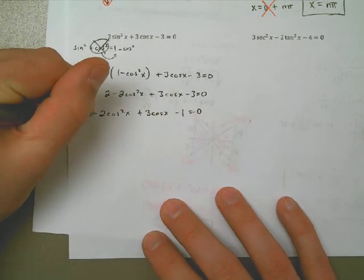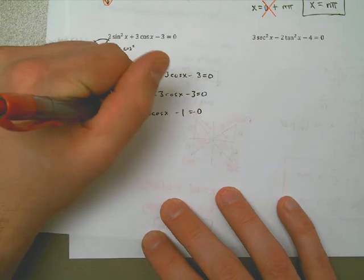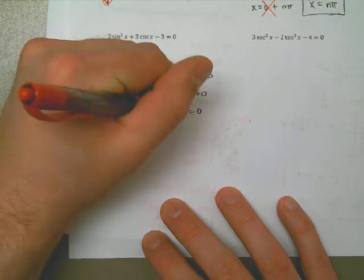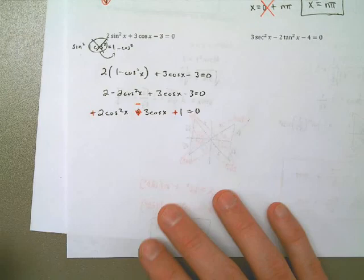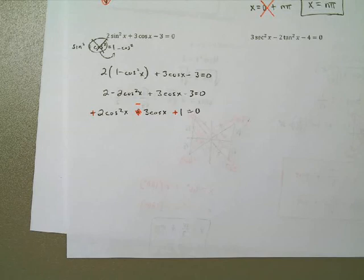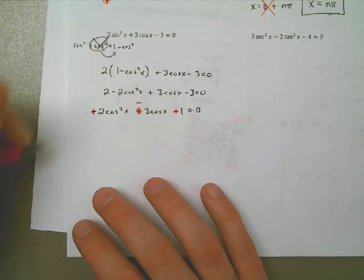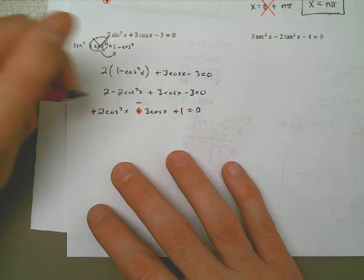At this point, I need to factor. It would be easier to visualize using the letter u instead. Instead of saying cosine squared, I'll say 2u squared, and instead of minus 3 cosine, I'll say minus 3u plus 1 equals 0. This is an easier way to factor — I'll just visualize it as this for a second.